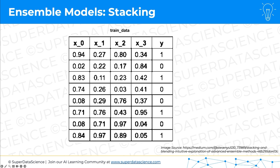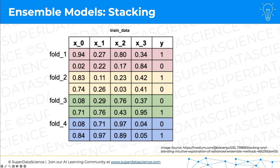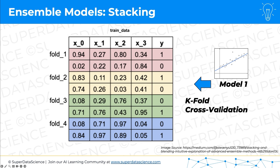Let's say you have data with four features and one dependent variable. What you're going to do is split it into several folds — in this case four folds — and train model one on this data. Effectively we are applying k-fold cross-validation to model one. K-fold cross-validation is something we discussed in Machine Learning Level Two, our previous course, and you can find more details on that there.